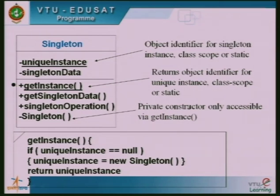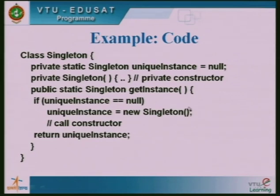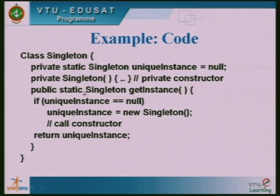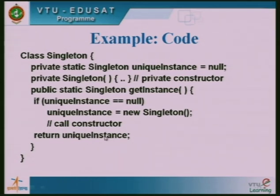When get_instance is executed, it checks if unique_instance is null. If there is no instance of the class, it creates a new singleton object; otherwise it simply returns the identity of the existing object via return unique_instance. The code is: class Singleton, private static Singleton unique_instance = null, and a private Singleton constructor. The public static get_instance method checks if unique_instance is null — if so, it creates a new object; otherwise it returns the existing identity. This is how the singleton design pattern is implemented.